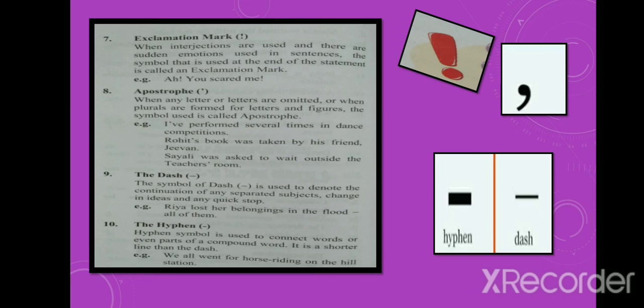Tenth, the hyphen. Hyphen symbol is used to connect words or even parts of compound words. It is a shorter line than the dash. For example: We all went for horse-riding at the hill station.